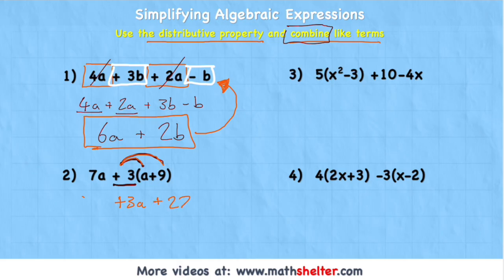Put back my 7a at the start and I have 7a plus 3a plus 27. Now I can begin to combine like terms and I can see I have like terms with my 7a and my 3a. So 7a plus 3a gives me 10a and then my positive 27 means plus 27. So my simplified expression would be 10a plus 27.